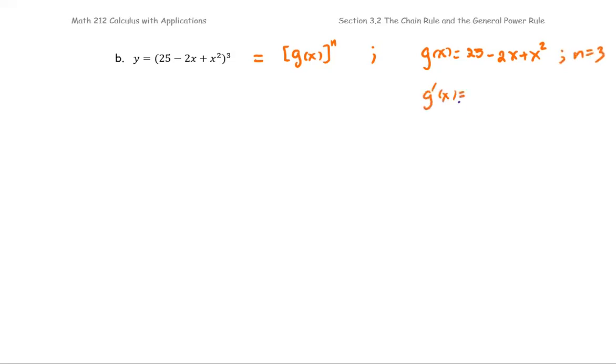We're going to need g prime or the derivative of g, which is 0 minus 2 plus 2x, or just negative 2 plus 2x. We get everything we need for the general power rule, and then that will give us the y prime in the form of n times the quantity g(x) to the power n minus 1 multiplied by g prime of x.